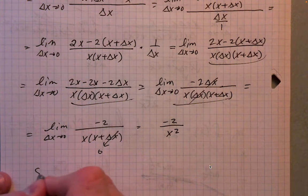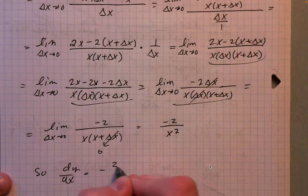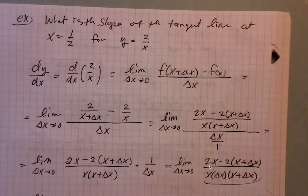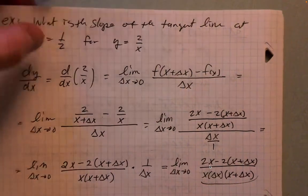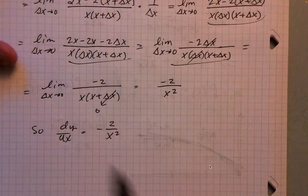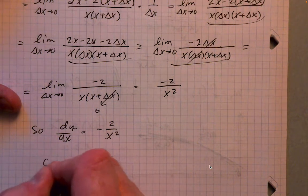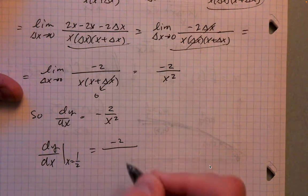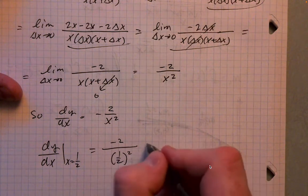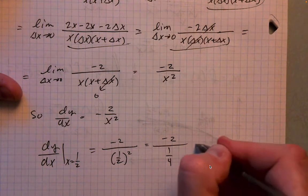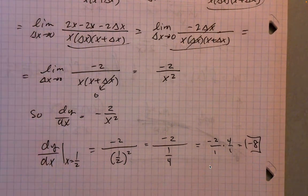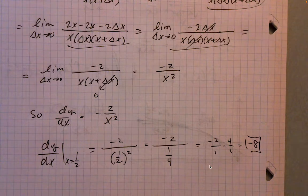So dy/dx equals negative 2 over x squared. Our initial ask was to identify the slope of the tangent line at x equals one-half. Evaluating the derivative at x equals one-half: negative 2 divided by (one-half) squared equals negative 2 over one-fourth, which equals negative 8. So the slope of the tangent line of y equals 2 over x at x equals one-half is negative 8.